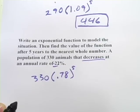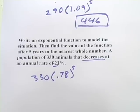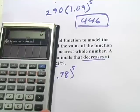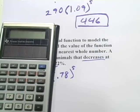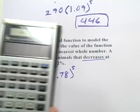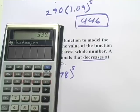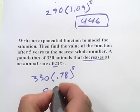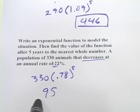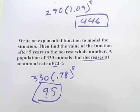So this is going to be 0.78, Y to the X, 5, and that's times 330, and we get 95 or so. So the population decreases to 95 animals after 5 years. So that's a little bit of work with exponential functions.